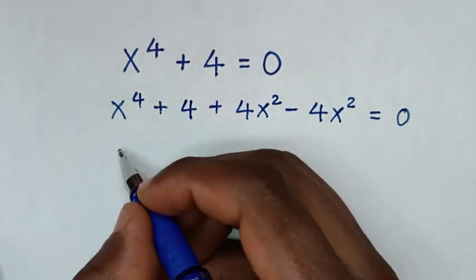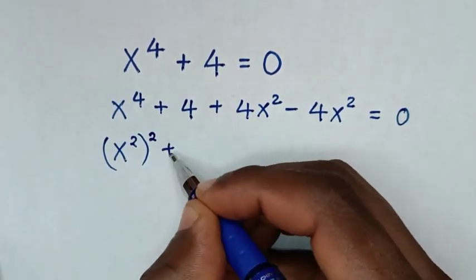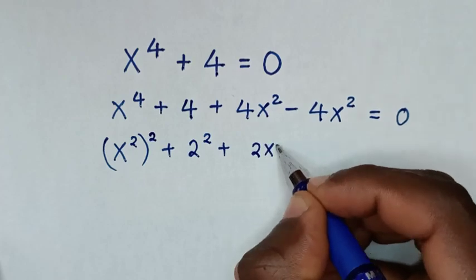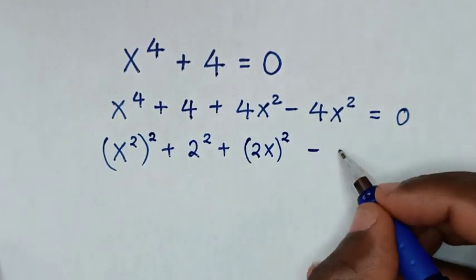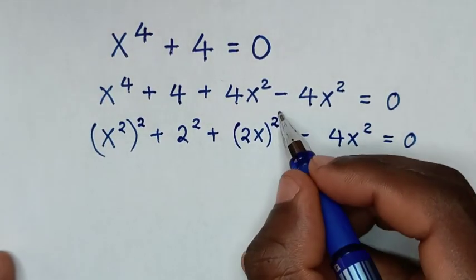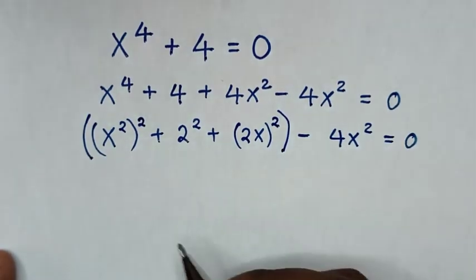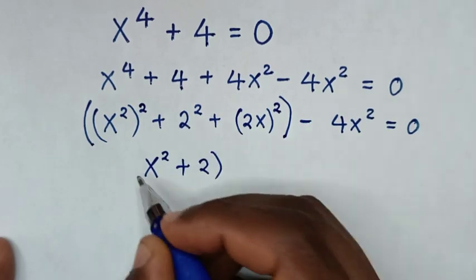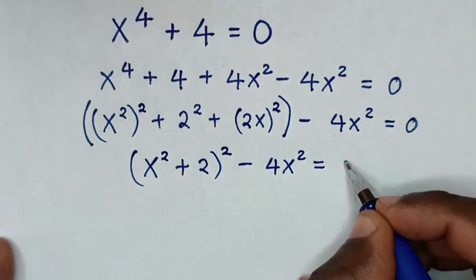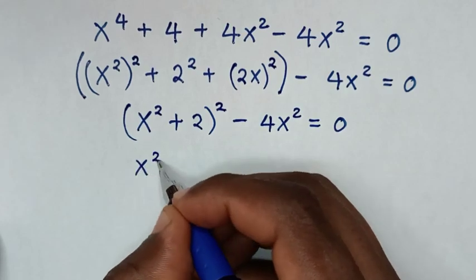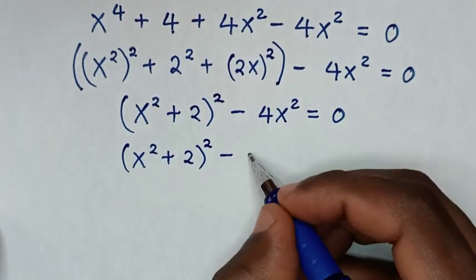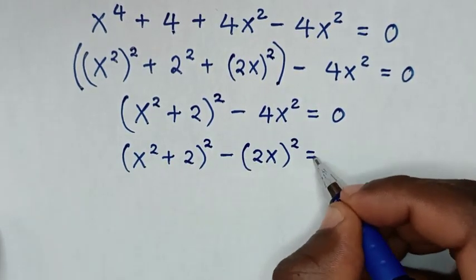From here, x power 4 is the same as (x squared) squared, and 4 is the same as 2 squared, and 4x squared is the same as (2x) squared. Then minus this 4x squared is equal to 0. This is the same as (x squared plus 2) squared, then minus this 4x squared, which is the same as (2x) squared, is equal to 0.